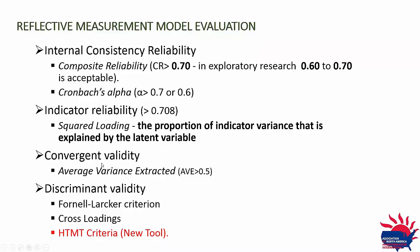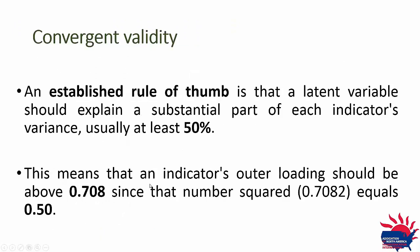For validity, AVE — Average Variance Extracted — should be higher than 0.5. For discriminant validity, people traditionally use Fornell and Lacker's criterion. Within PLS there was also cross-loadings as a tool. And at the end of 2015, a new tool called HTMT criteria was introduced — based on simulations by PLS scholars — because Fornell and Lacker's approach is very old and has discrepancies. They ran extensive simulations and determined that HTMT criteria is a well-deserving discriminant validity tool for researchers to use.